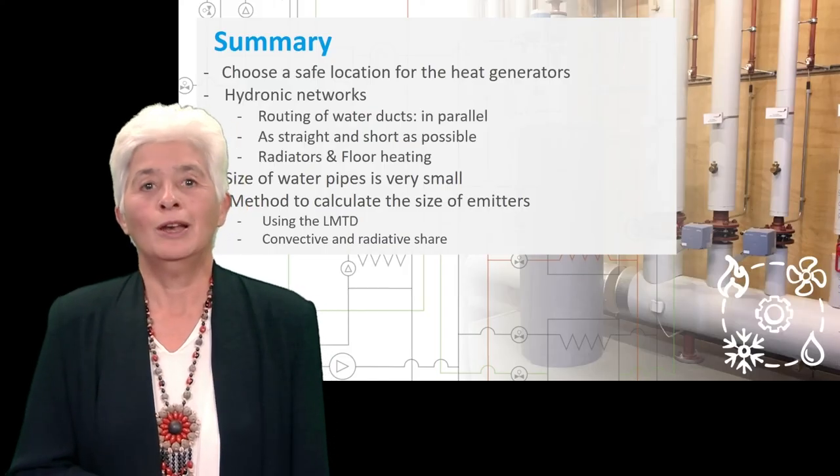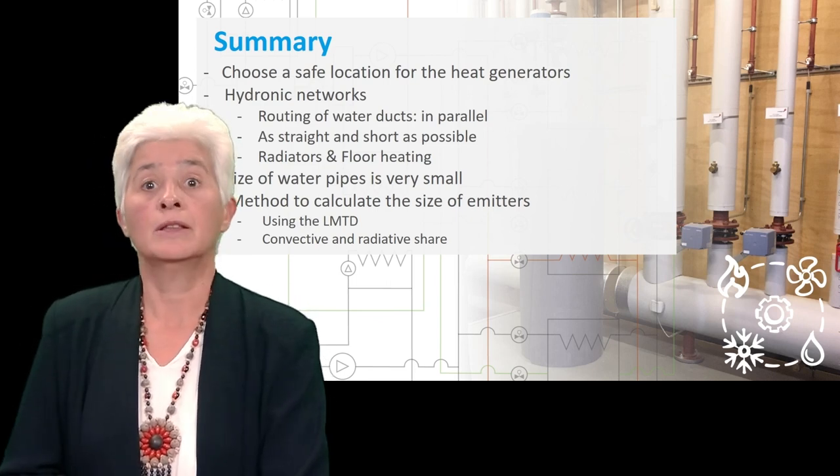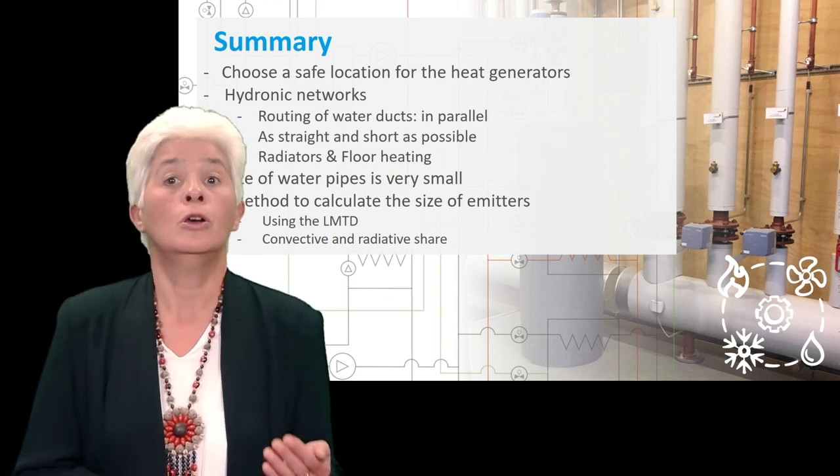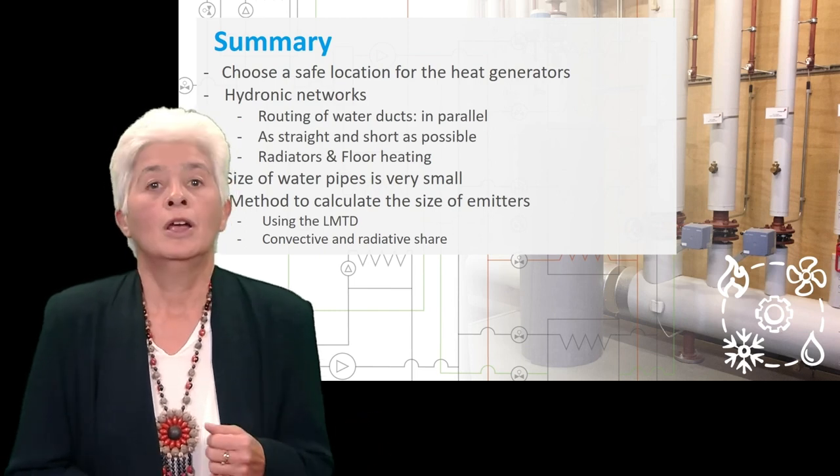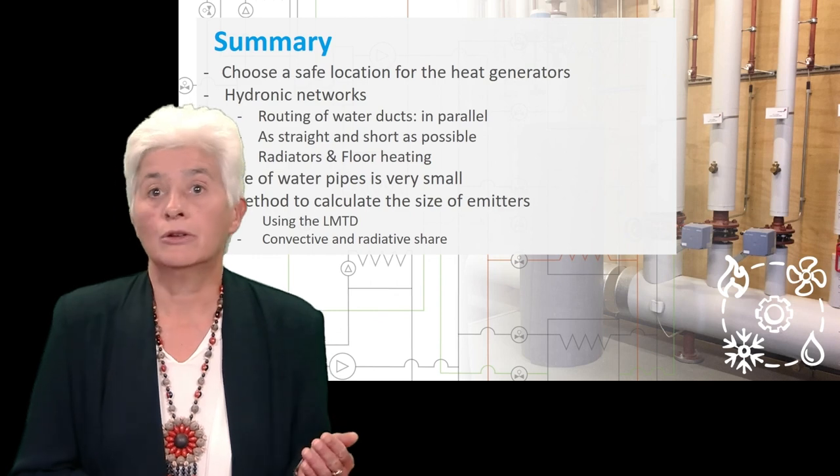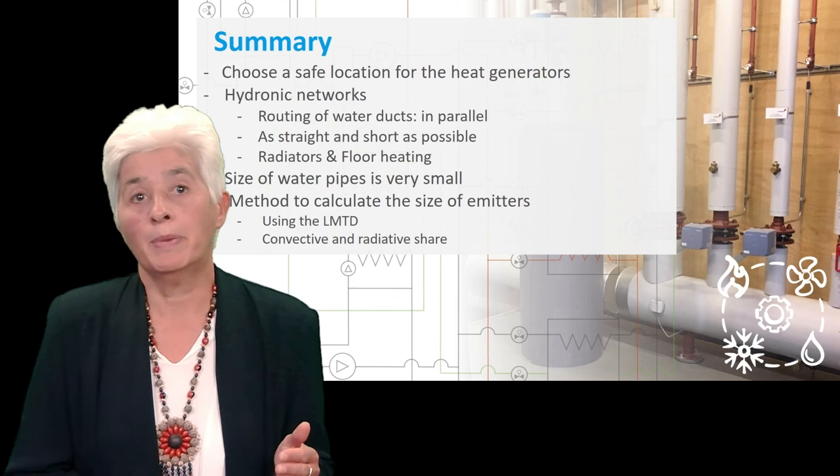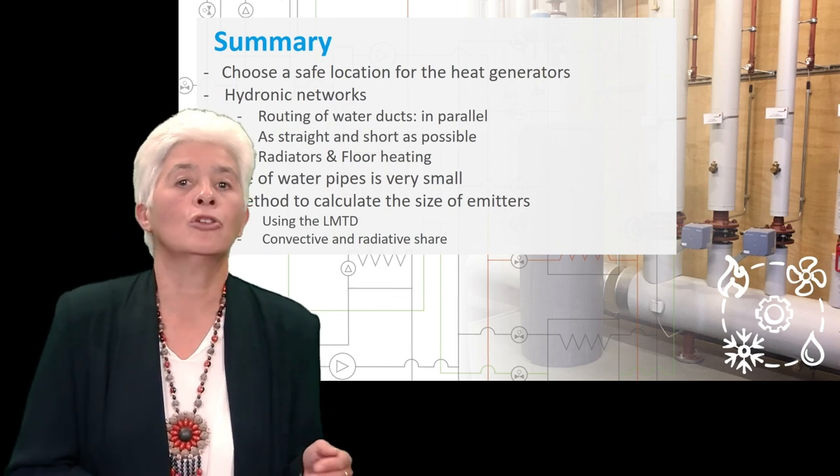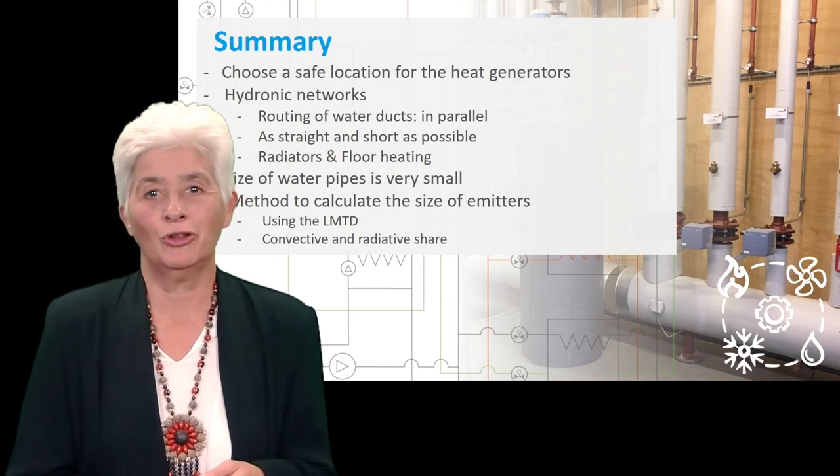In this lecture, we looked at the location of heat generators, and then studied hydronic networks, which are the water ducts distributing the hot heating water to the local emitters—radiators or floor heating, for instance. We saw that a good hydronic design with radiators in parallel is recommended. We also discovered that the diameter of water pipes is really small, and we described the way to calculate the size of the radiators needed to heat rooms. Thank you very much for listening.